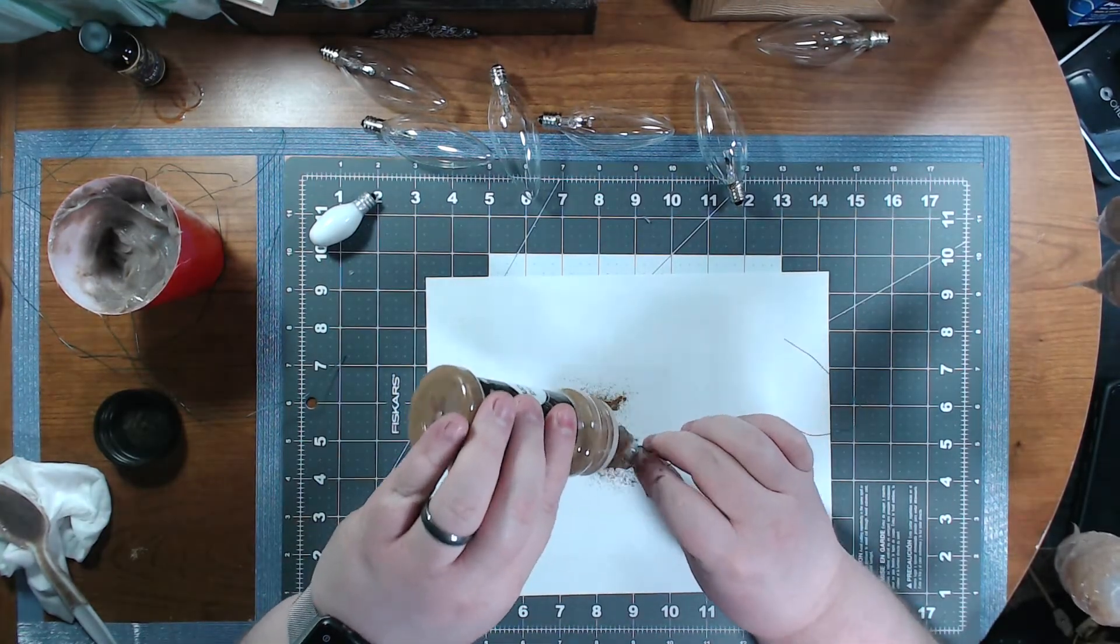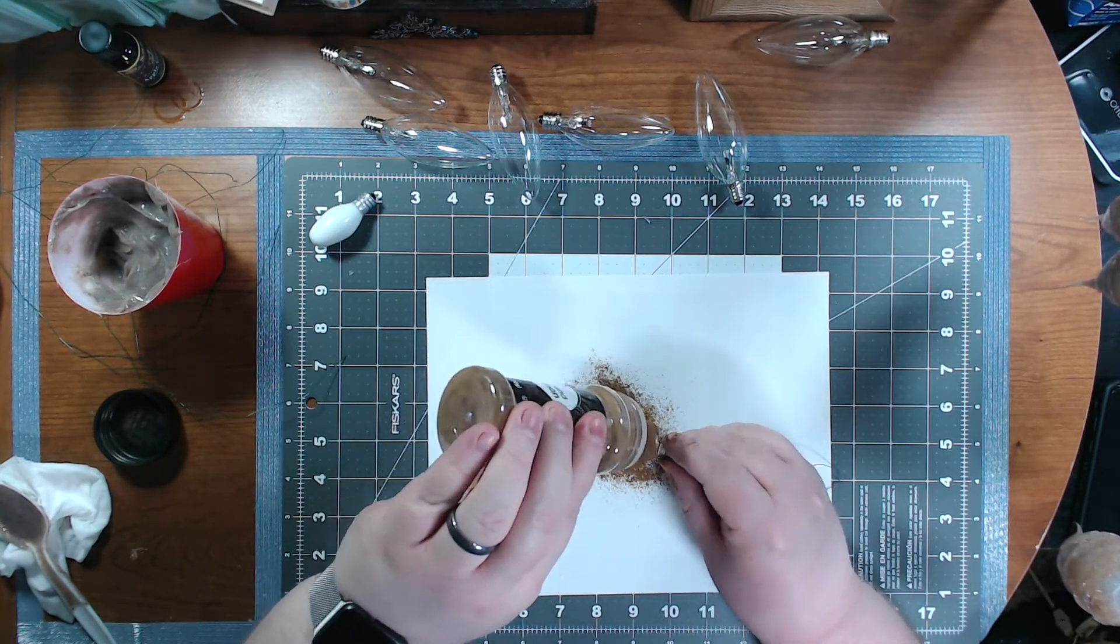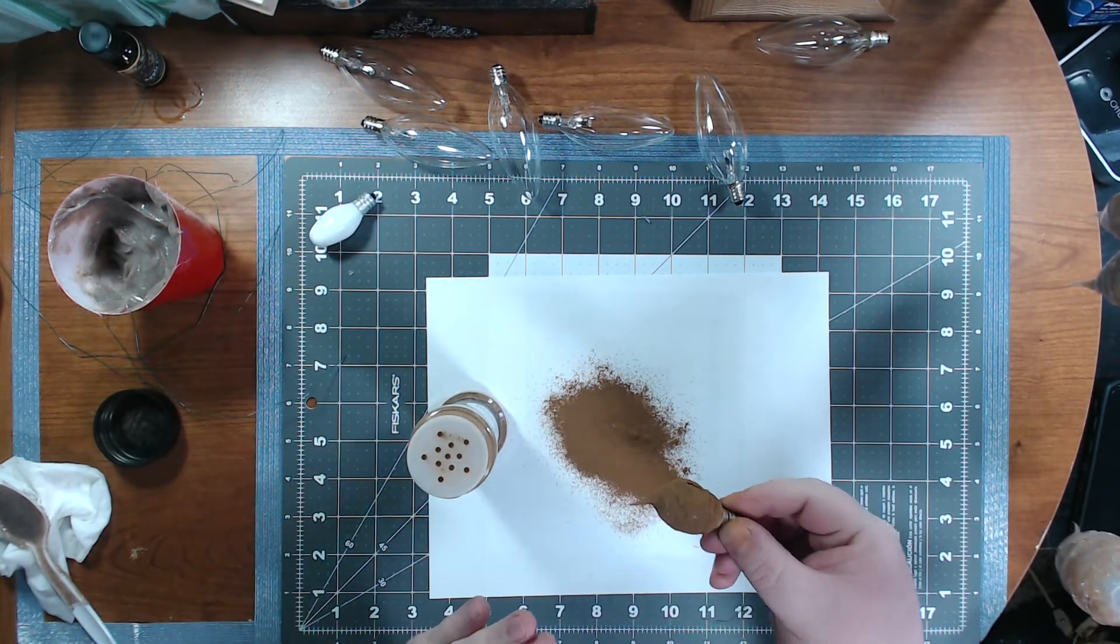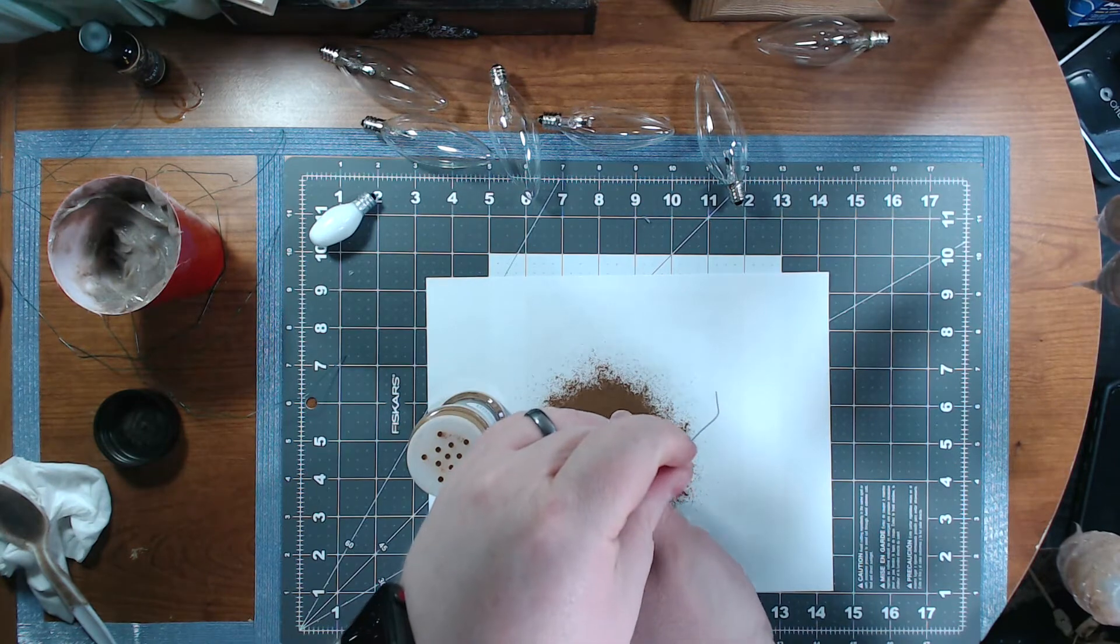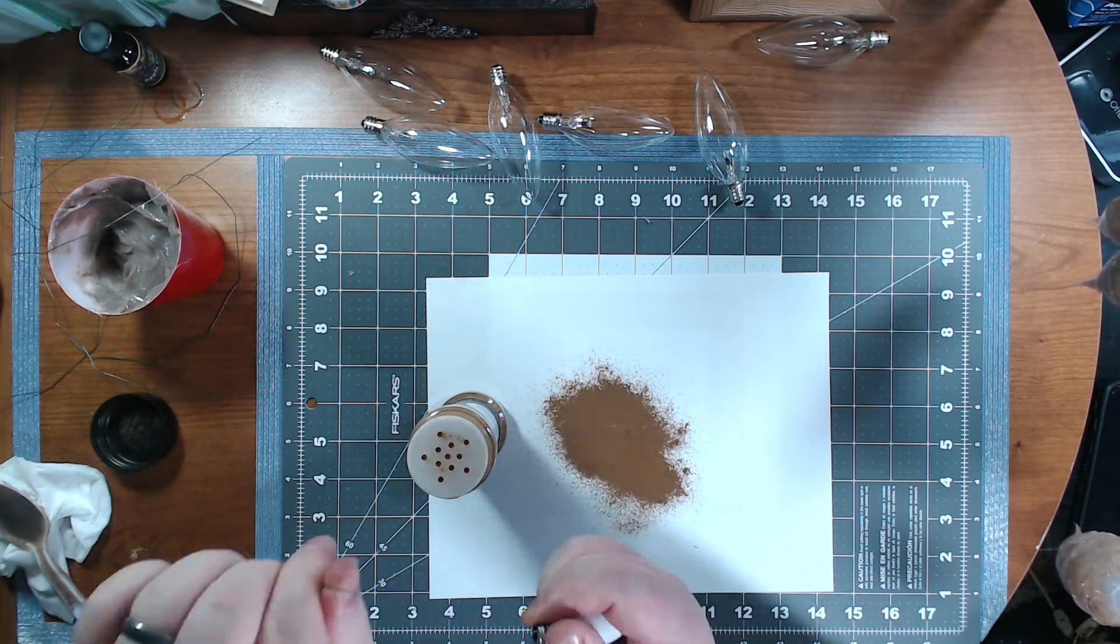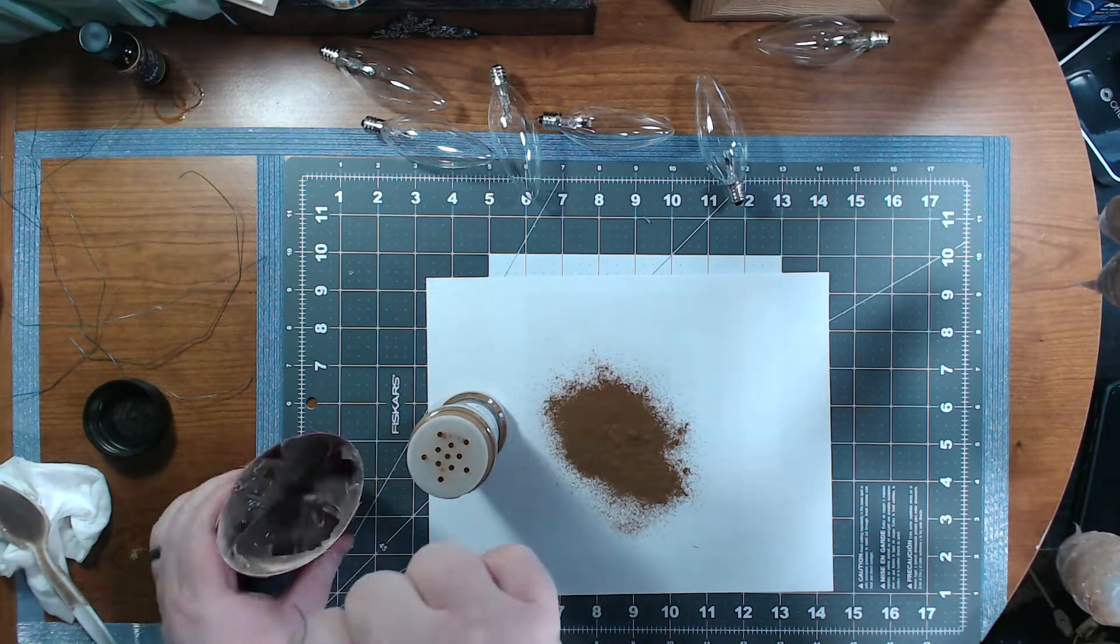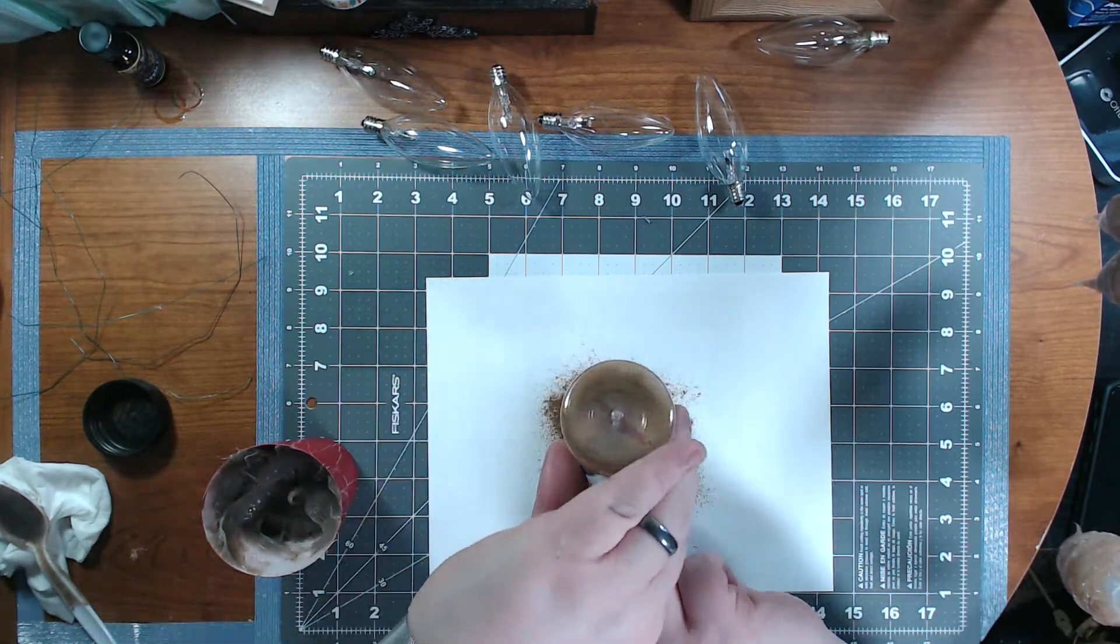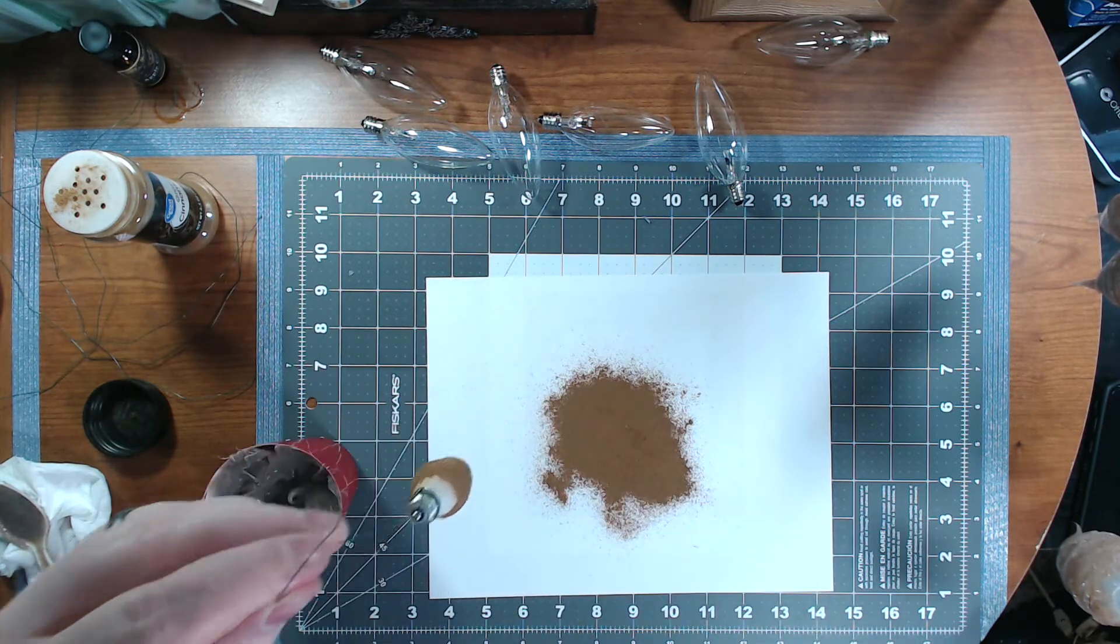Now to make this look really grungy and old, let's just try putting some ground cinnamon directly on it. Really coat it, knock off the excess. That looks pretty cool. So let's do the other bulb to match it. Okay, let's see how these turn out if they dry really well, and I'll show you here.